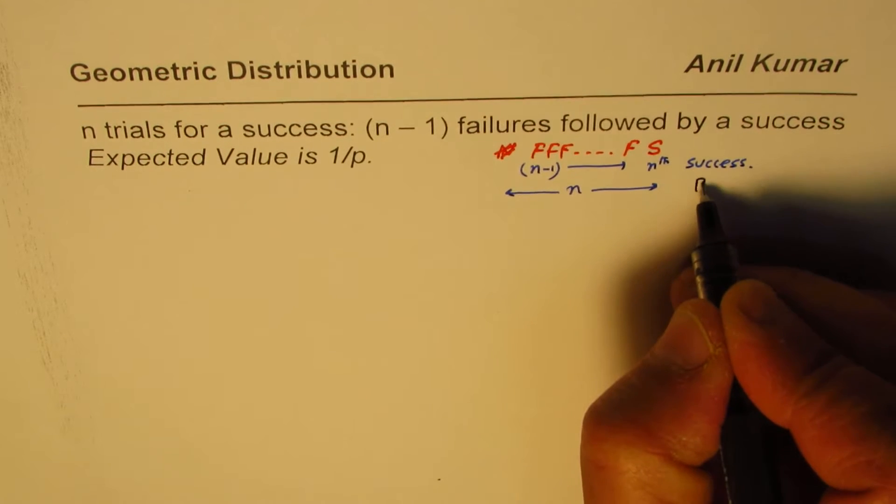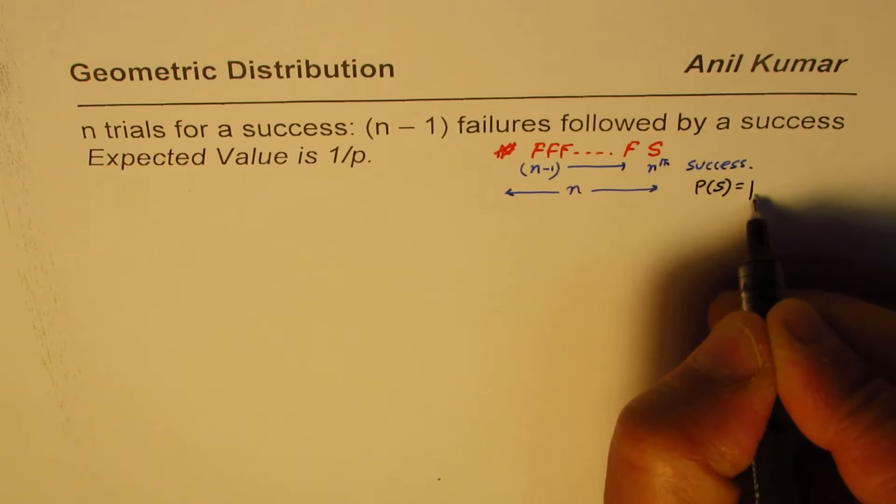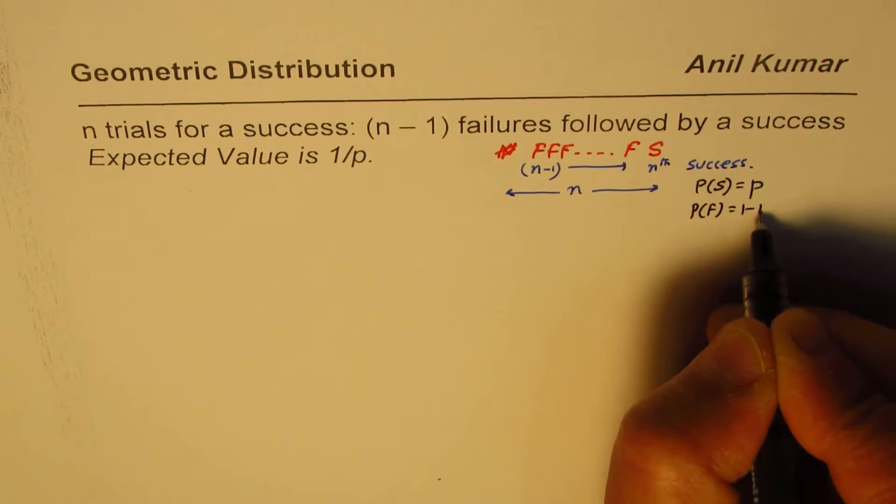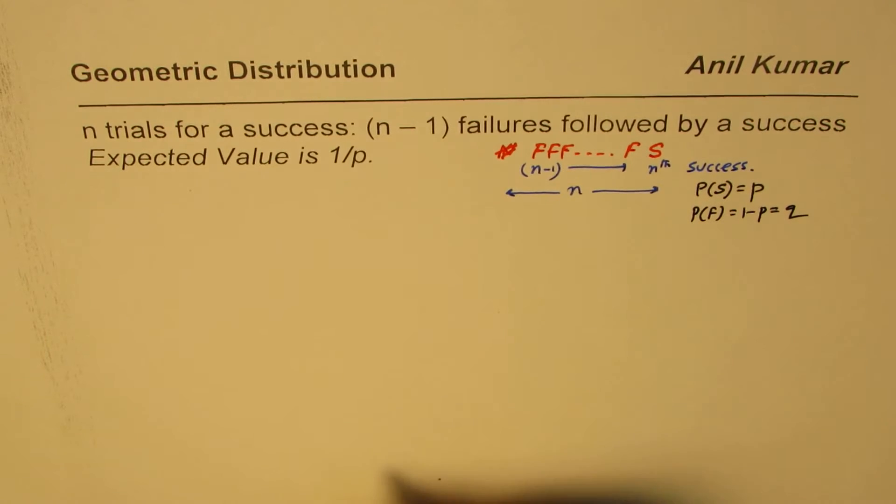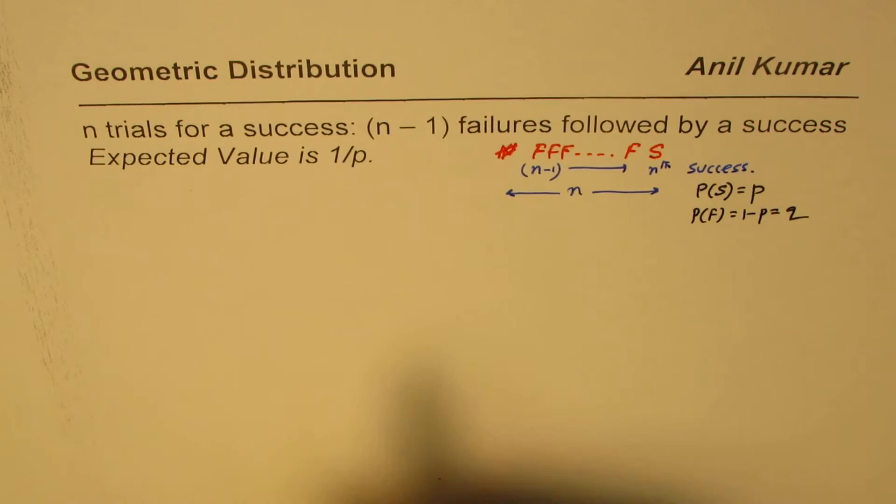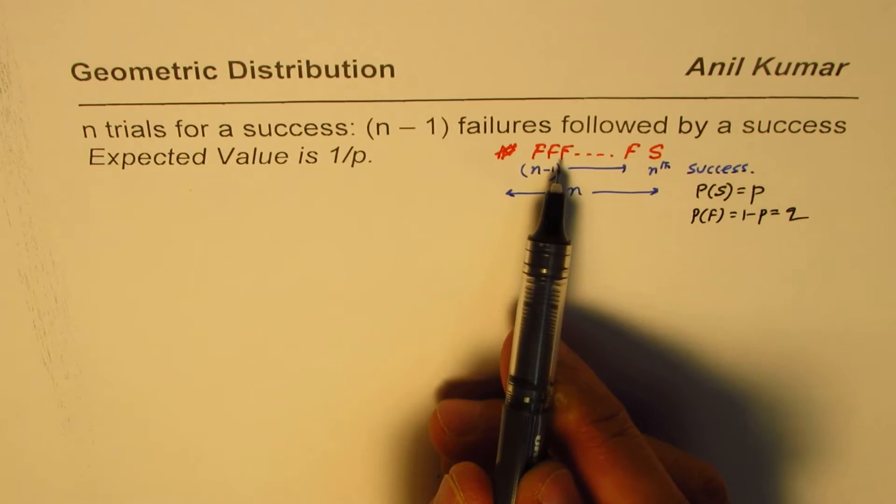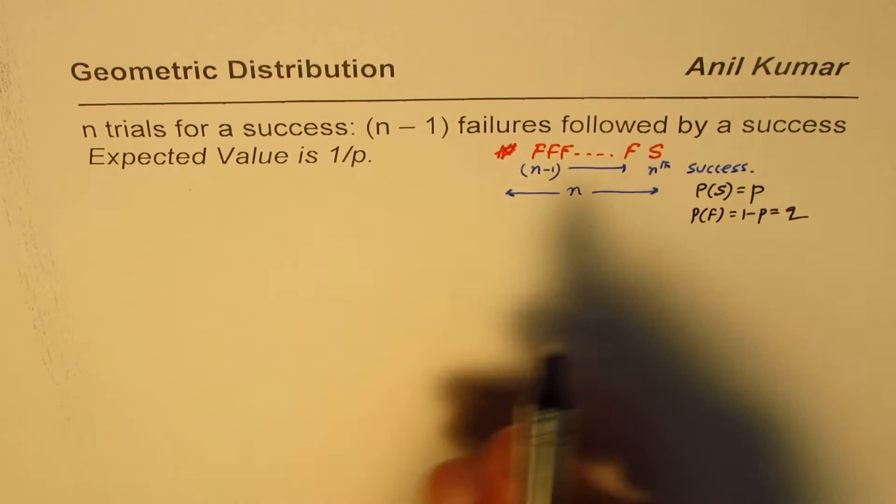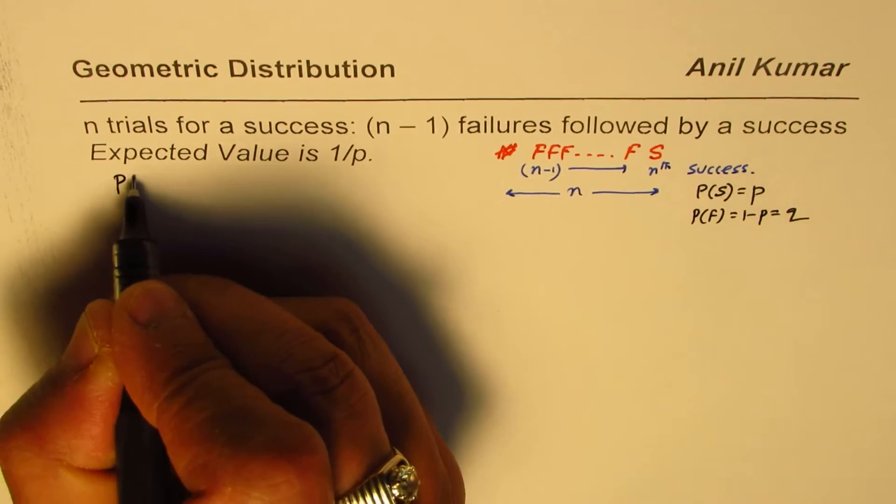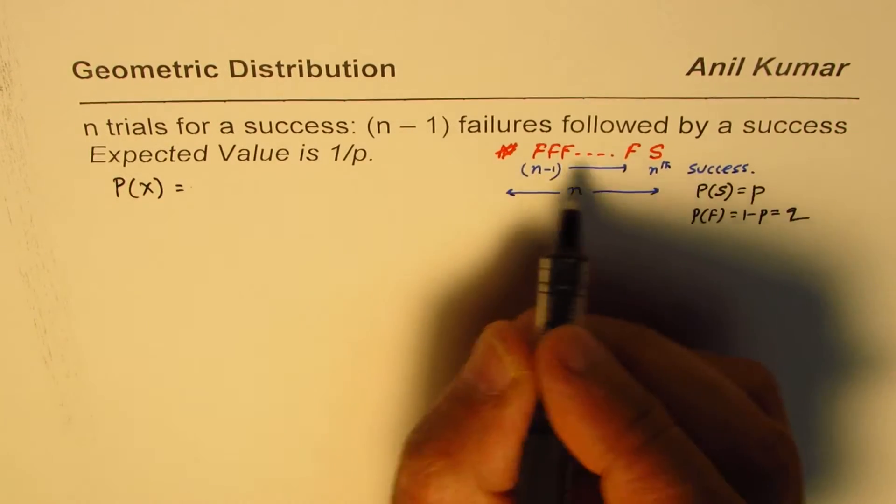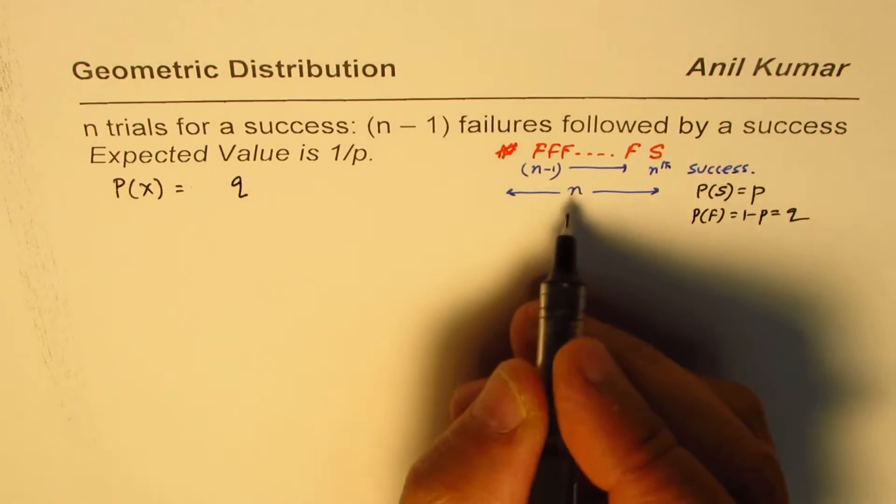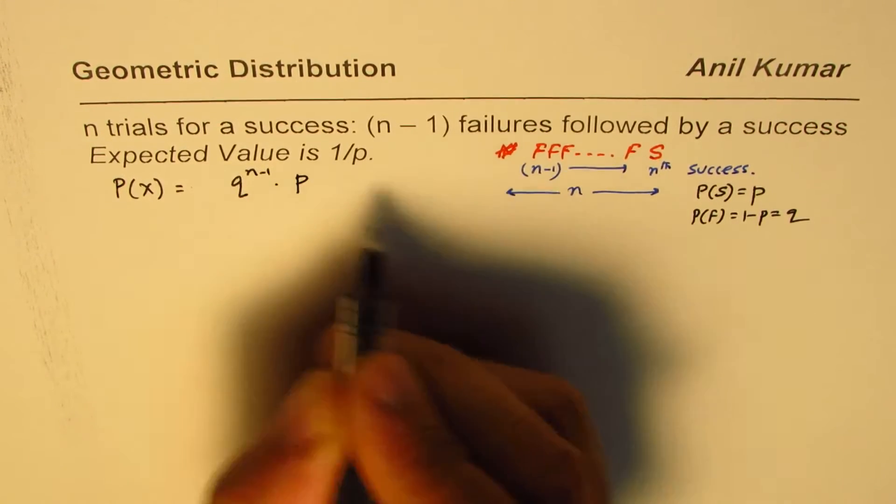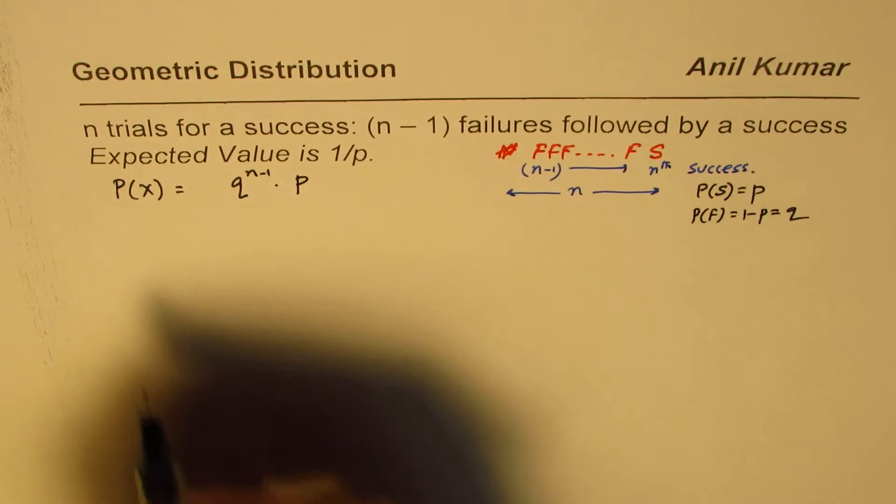In this case, we have probability for success as P, probability for failure will be 1 minus P, or read as Q. When we have n minus 1 failures followed by a success, the probability for this random variable will be Q to the power of n minus 1 times P. So that is the probability.